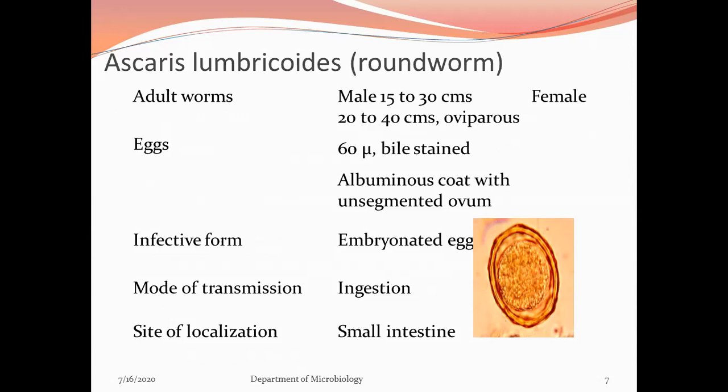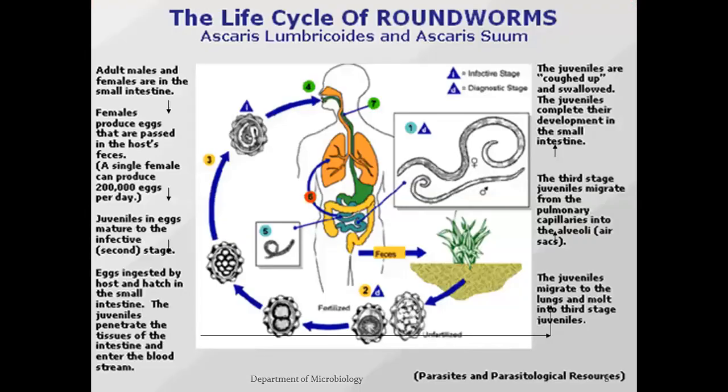In brief: adult male measures 15–30 cm, female 20–40 cm. Females are oviparous. Eggs are bile-stained, measuring about 60 micrometers, with an albuminous coat and unsegmented ovum. The infective form is the embryonated egg. Mode of transmission is ingestion, rarely inhalation. Site of localization is the small intestine. The life cycle involves only one host — the human. The infective stage is the embryonated egg containing L2 larva.